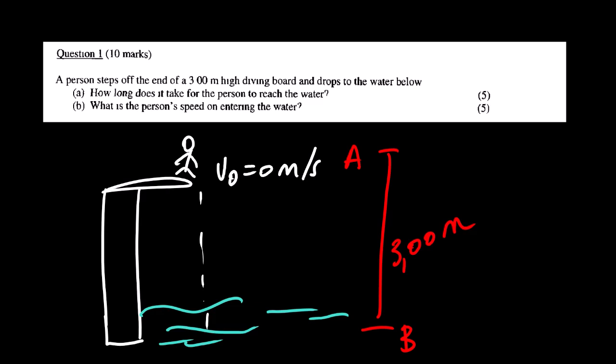Looking at other physical quantities, we have time it takes for the person to move from A to B. We have our displacement Δy as 3.00 meters. We have our g, gravitational acceleration as 9.8 meters per second squared. With this data, we can actually answer the question.